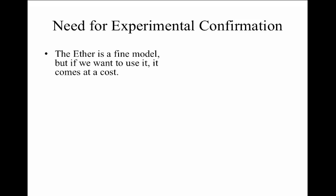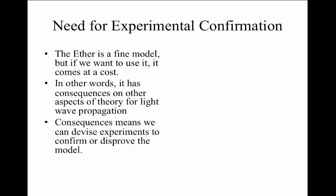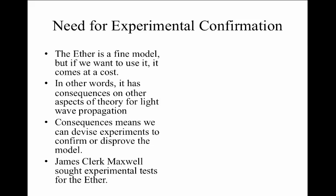So there was a real need for experimental confirmation of this unobservable concept called the ether. It's a fine model, but if we want to use it, it comes at a cost. In other words, it has consequences for other aspects of the theory of how light propagates through it. Consequences mean that we can devise experiments to either confirm its existence or disprove the model altogether. Maxwell, to his credit, sought experimental tests that would demonstrate that there was such an ether.